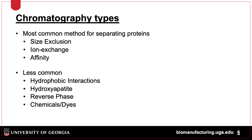Hydroxyapatite resins contain a form of calcium phosphate that can be used in the separation of proteins and DNA. Chemicals and dyes may also be used, but they have specificity for certain classes of proteins.